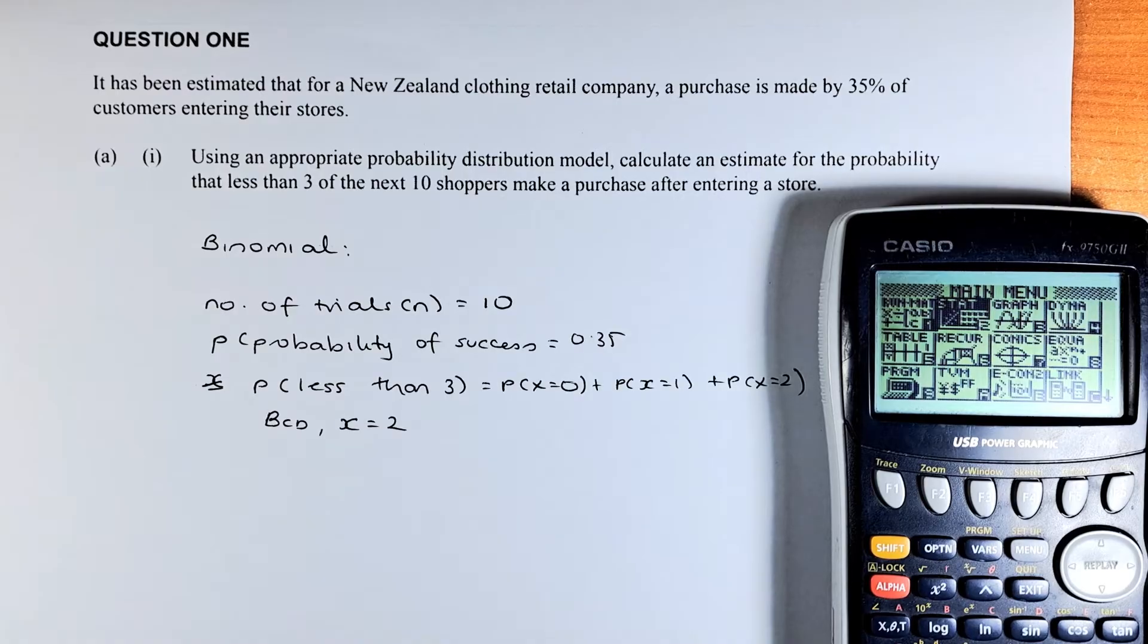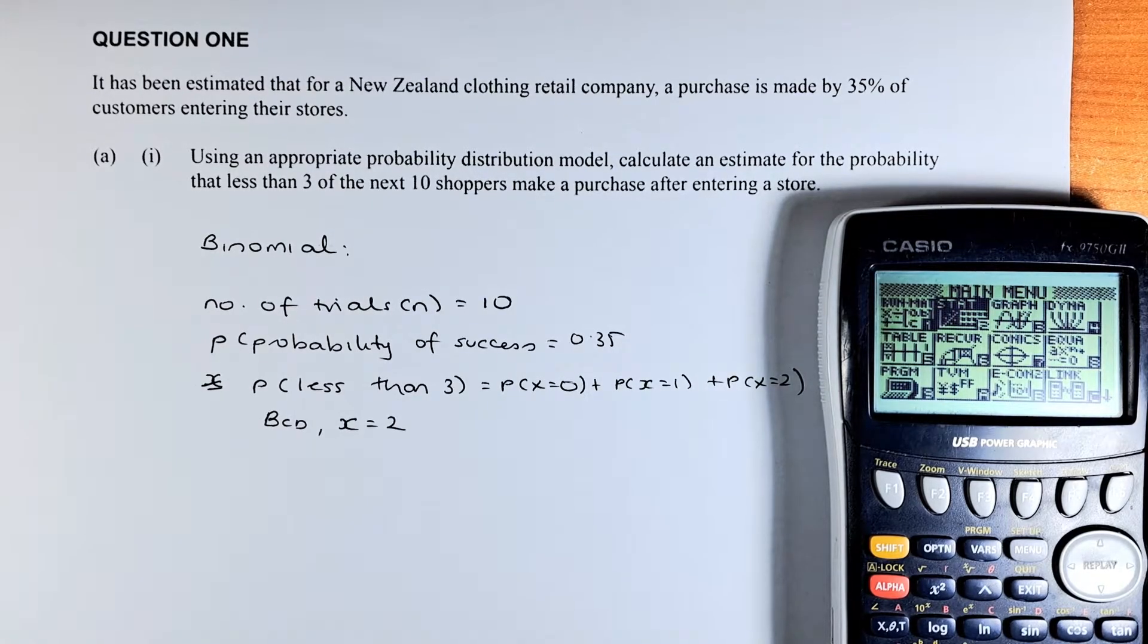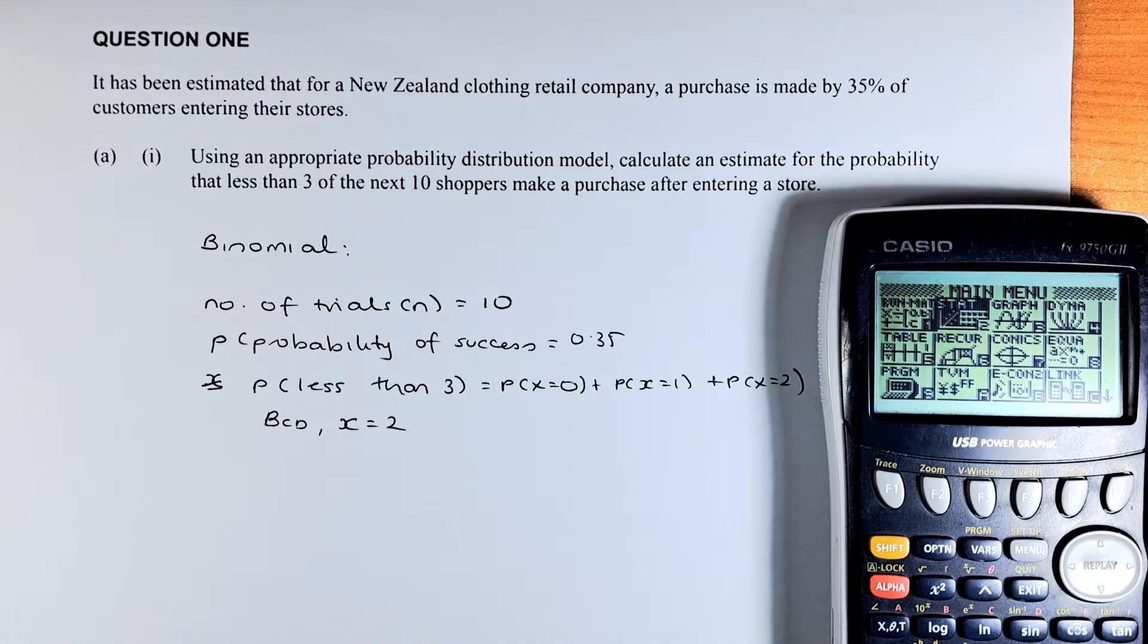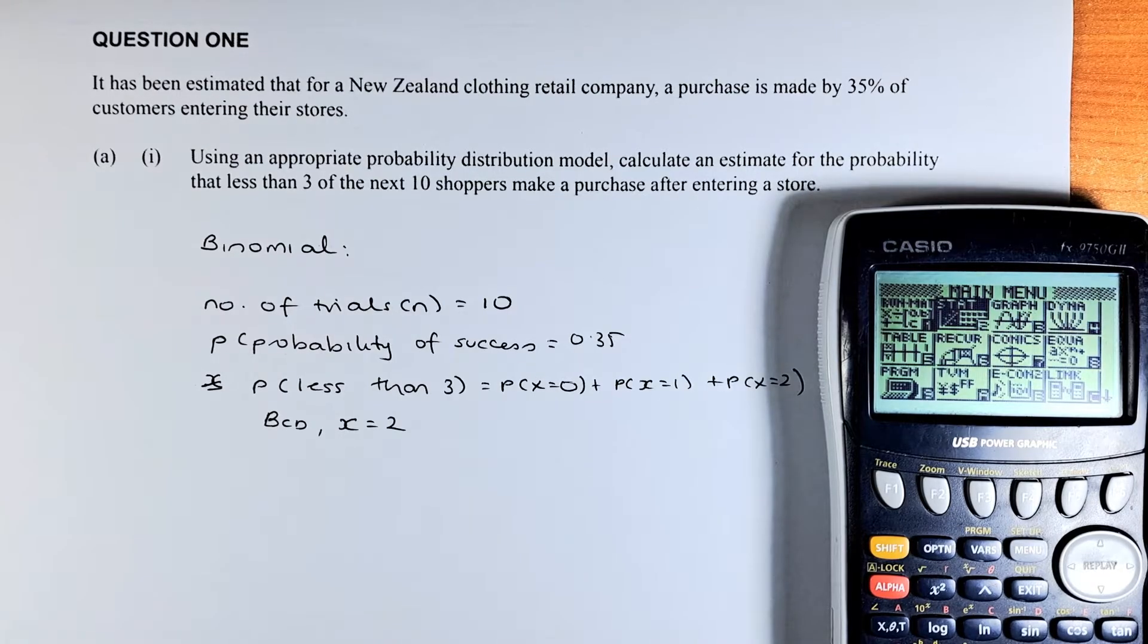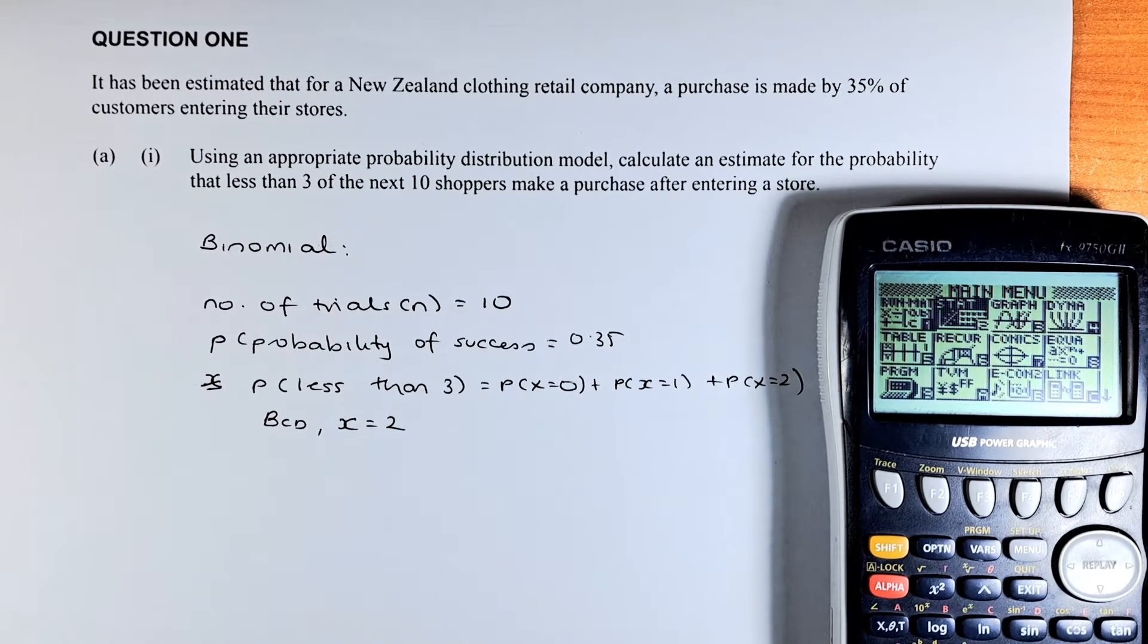It has been estimated that for a New Zealand clothing retail company, a purchase is made by 35% of customers entering the stores. Using an appropriate probability distribution, calculate the estimate for the probability that less than 3 of the next 10 shoppers make a purchase after entering the store. Okay, without further ado, let's try to solve this.